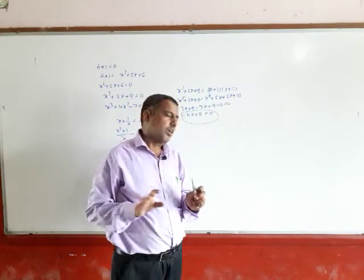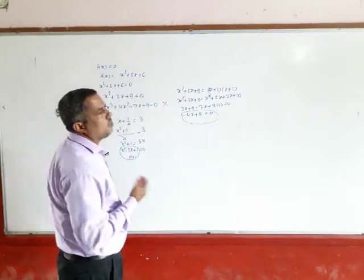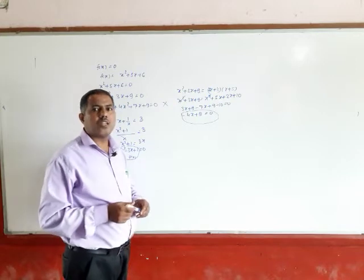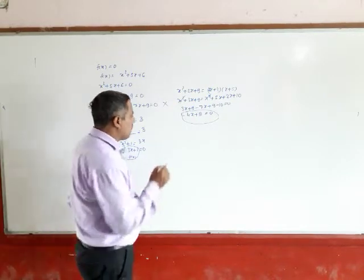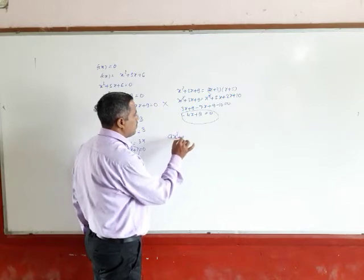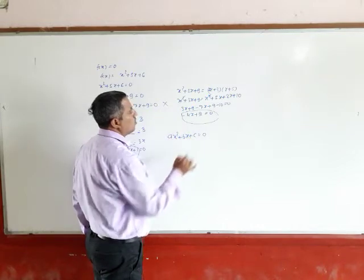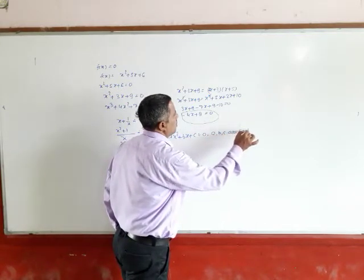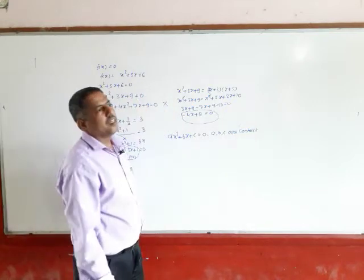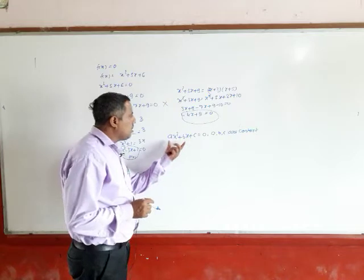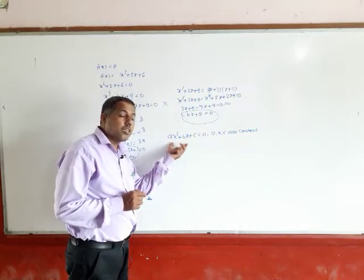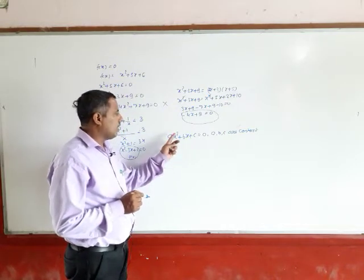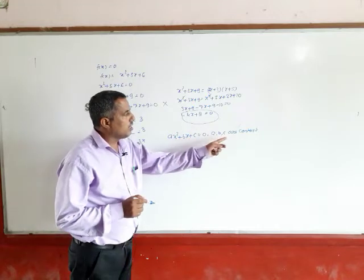The general equation of the quadratic equation is ax² + bx + c = 0, where a, b, c are constants. This is the general quadratic equation because the power is 2 and a, b, c are constants.